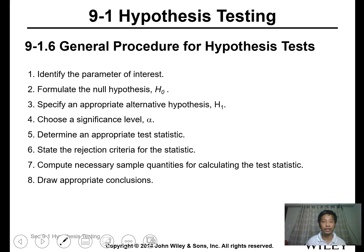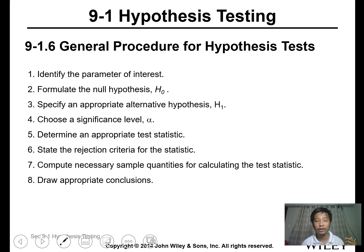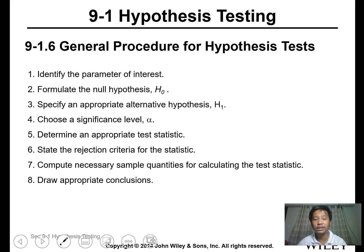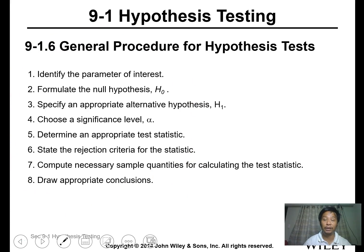The general procedure for hypothesis testing is: identify the parameter of interest, formulate the null hypothesis, specify an appropriate alternative hypothesis, choose the significance level, determine the appropriate statistical test, state the rejection region, calculate the test statistic, and provide a conclusion.